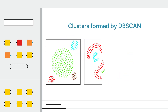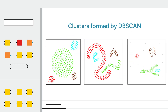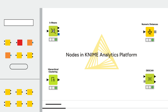DBSCAN can form clusters of any shape. The K-means, hierarchical clustering, and DBSCAN algorithms are available in the platform as K-means, hierarchical clustering, and DBSCAN nodes, respectively. These nodes run the clustering algorithm and assign cluster labels to data points.